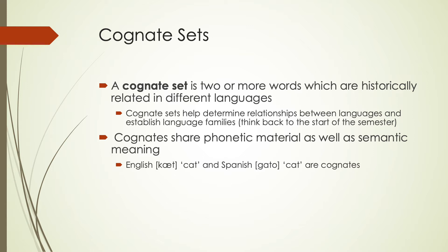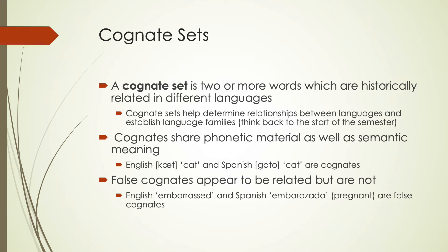That final O is a separate morpheme, so it wouldn't really play into our analysis. However, there are times we can also find what are known as false cognates — words that look like they might be related but actually aren't. They don't have a historical relationship; they just happen to sound similar. This is why you need both phonetic material and semantic meaning. For instance, 'embarrassed' in English sounds very close to 'embarazada' in Spanish, but 'embarazada' means pregnant. These are false cognates because they don't give us information about relatedness between languages.